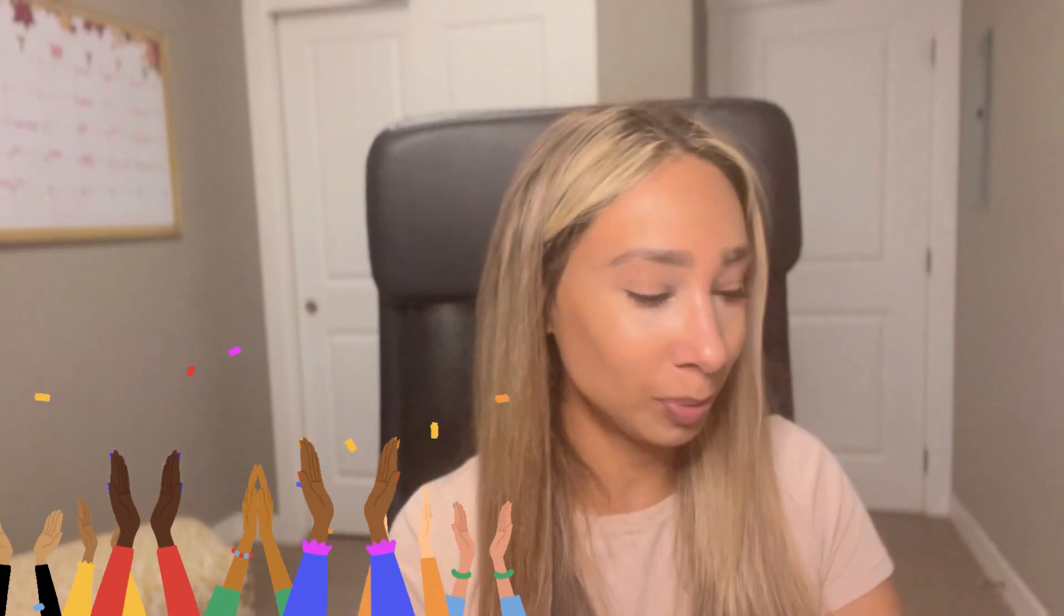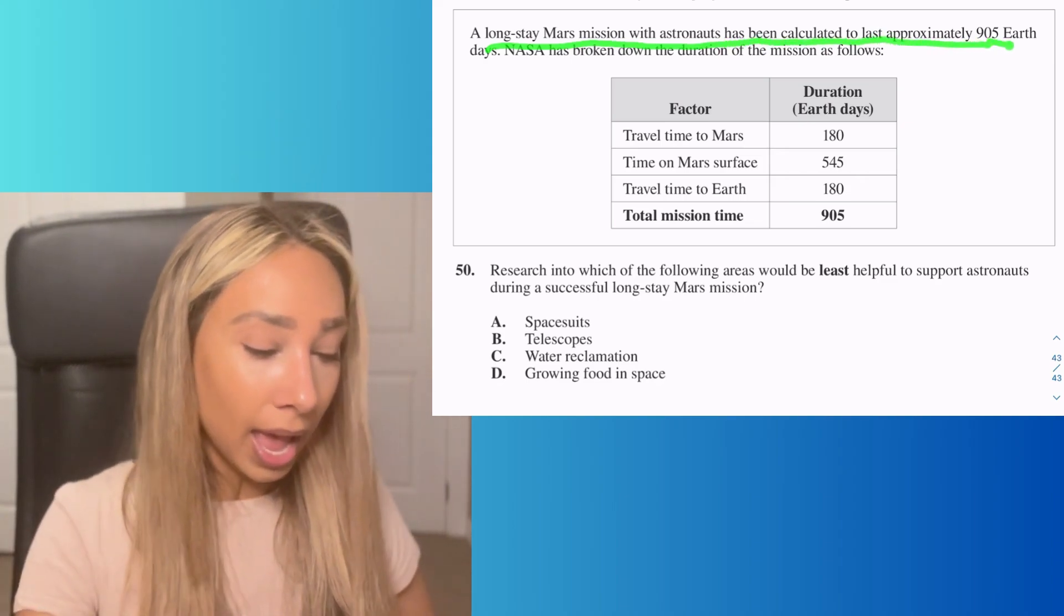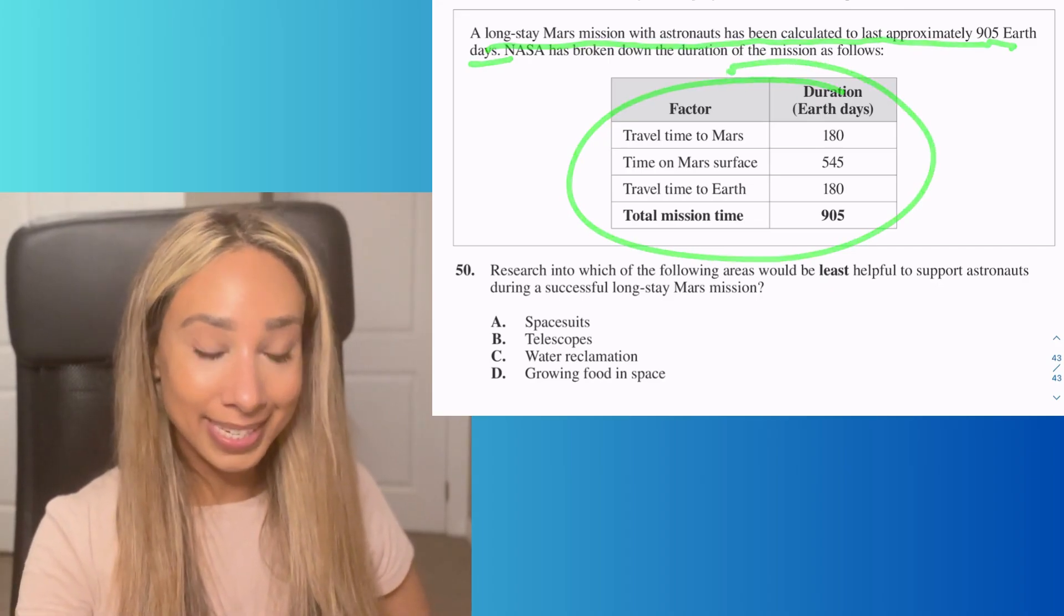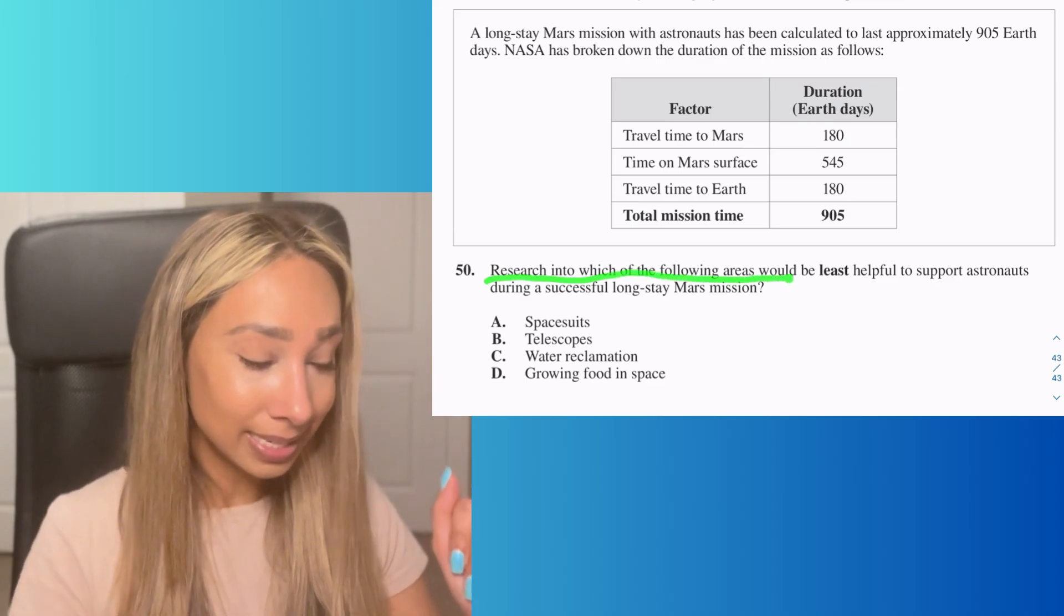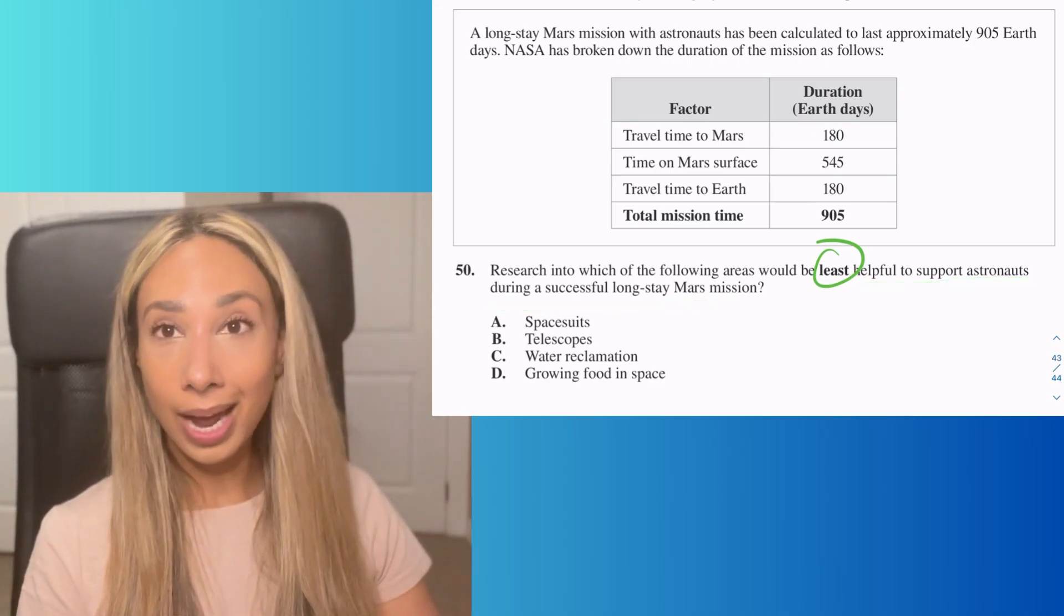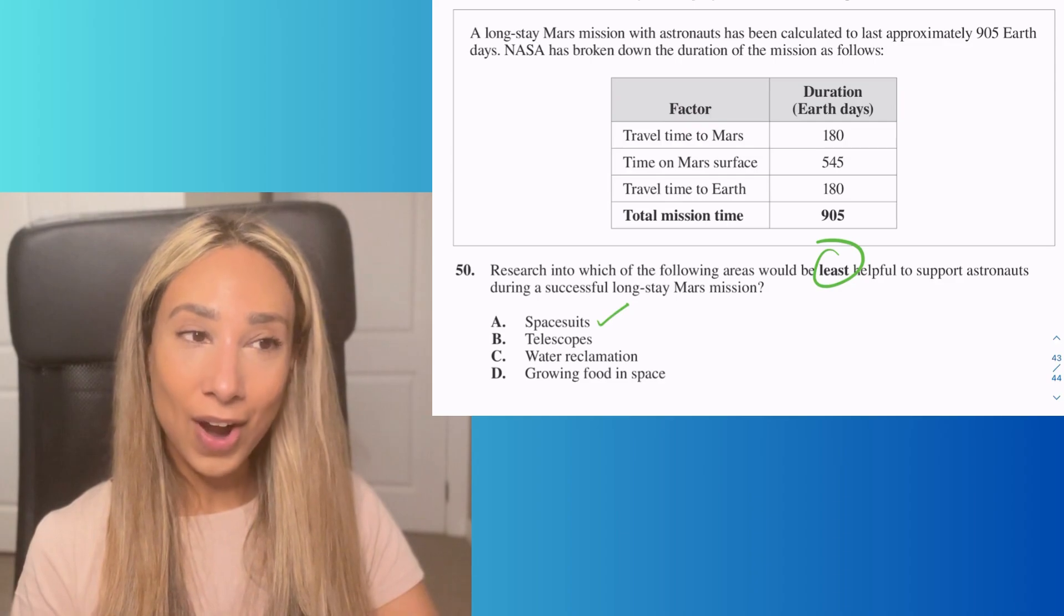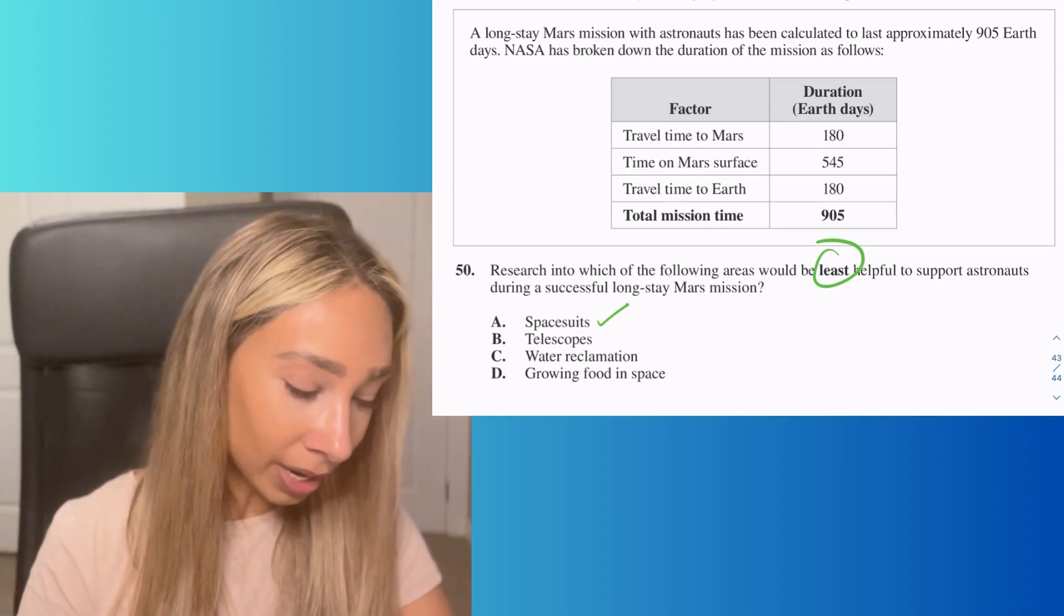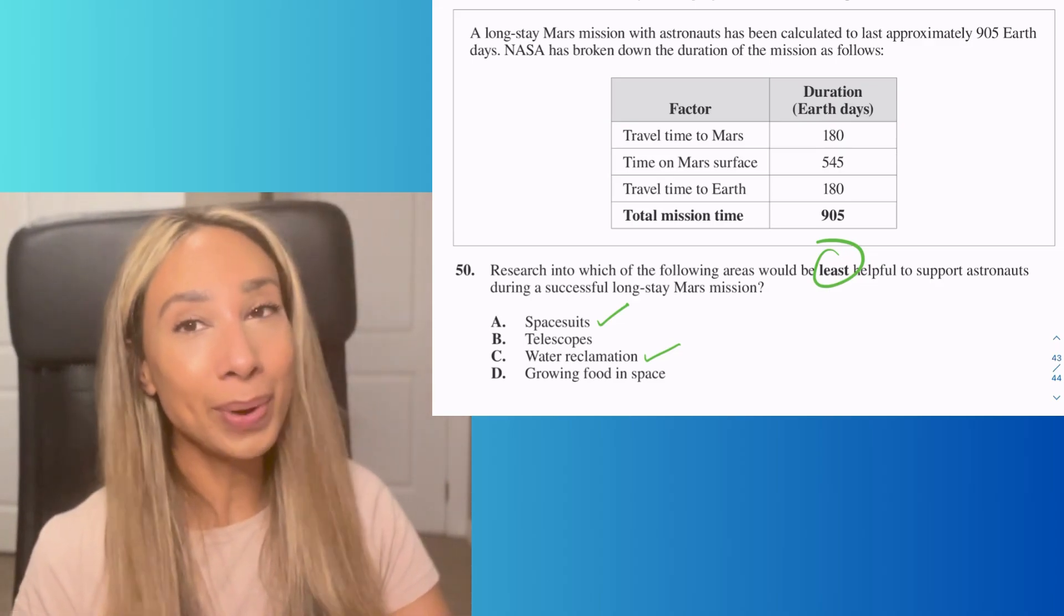Number 50. Last one! If you've made it this far, congratulations. A long-stay Mars mission with astronauts has been calculated to last approximately 905 Earth days. Which area would be least helpful to support astronauts during a successful long stay on Mars? They'll need spacesuits. Telescopes—I'm not sure what they'd want to see. Water reclamation—they need clean drinking water. Growing food is important for survival. The only one that doesn't fit is option B.